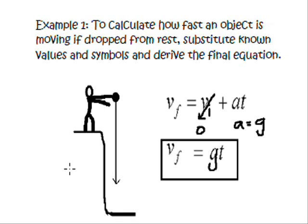Let's go over how we can use these equations in different situations. Here's one example. If you want to calculate how fast an object is moving dropped from rest, we start with amigo number one. Vf equals the initial speed plus acceleration times time.